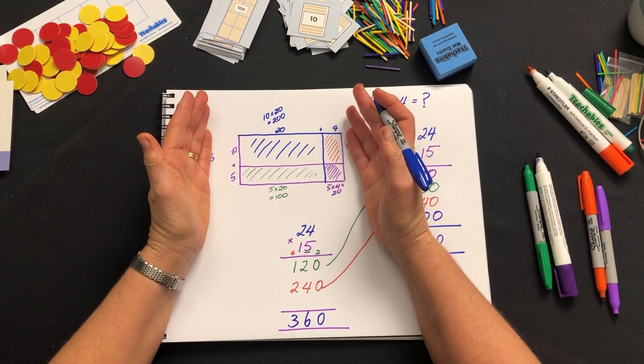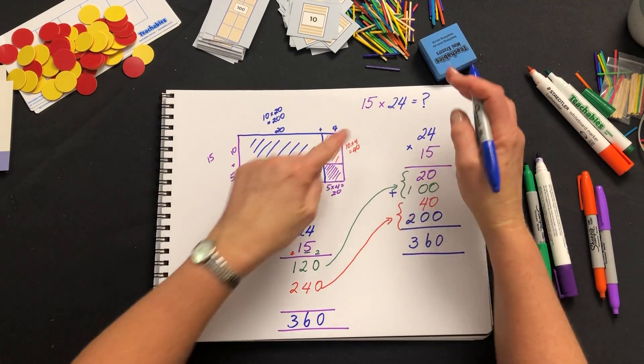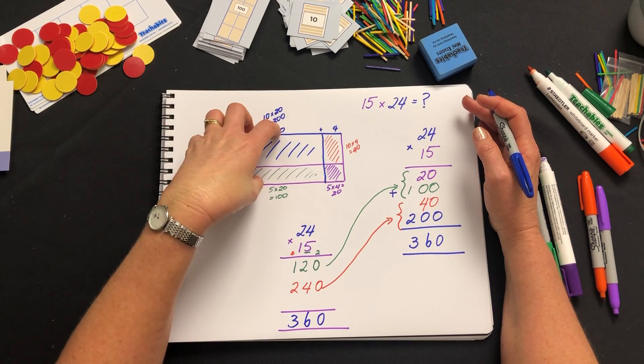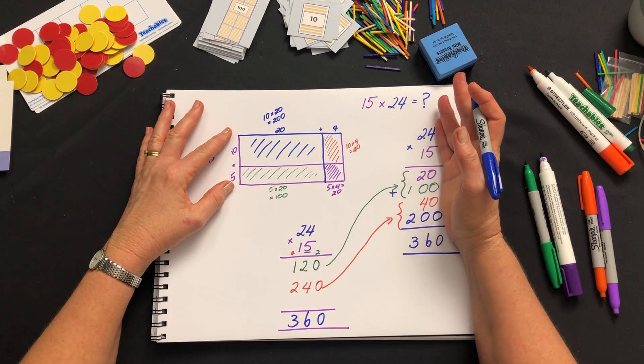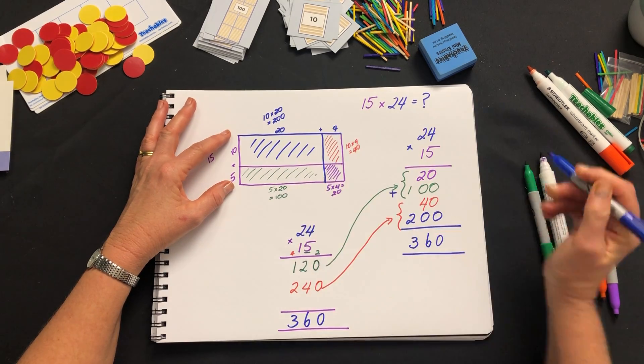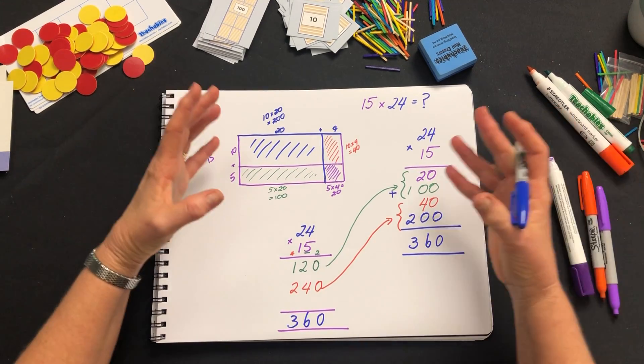So using the rectangle to represent the multiplication gives students a visualisation or a visual cue as to the multiplications that they're doing. They won't miss out any of the four rectangles there that will come together.